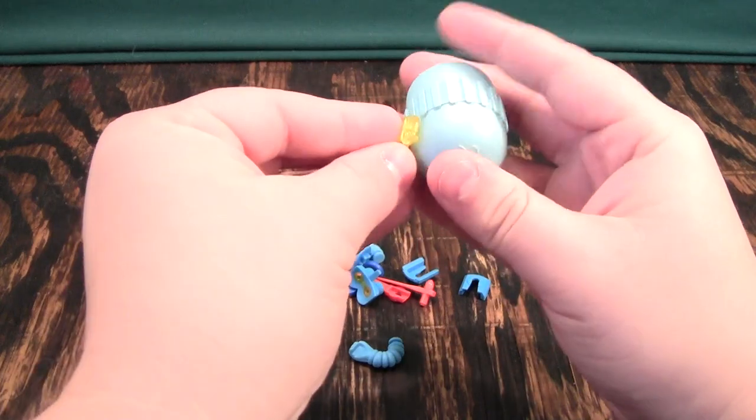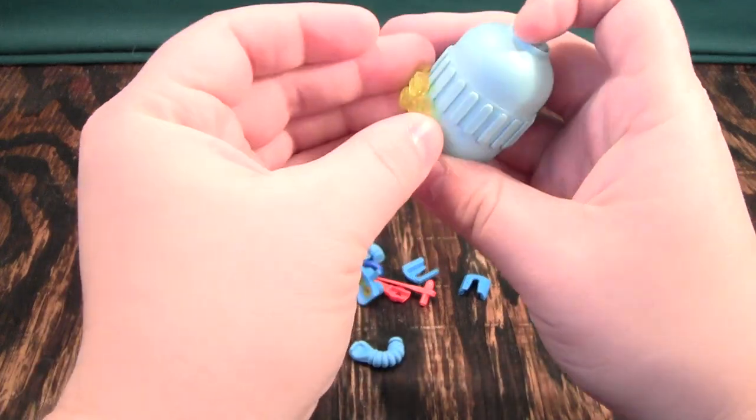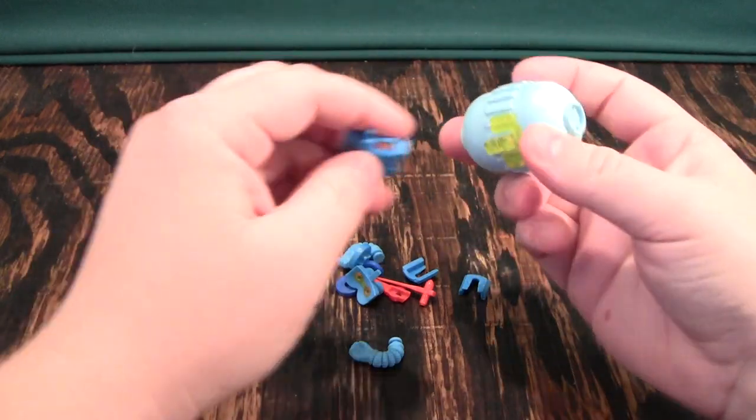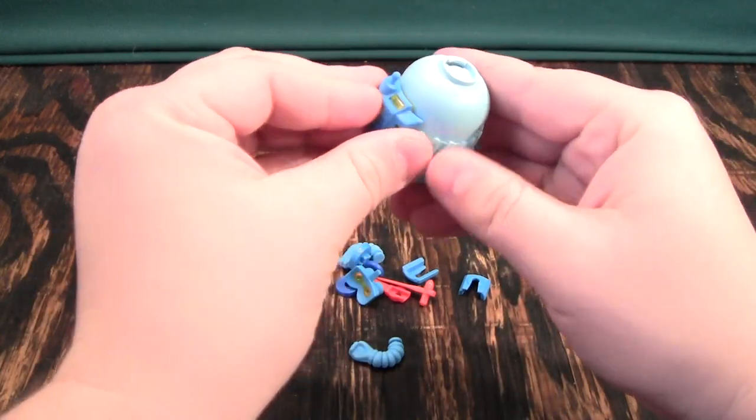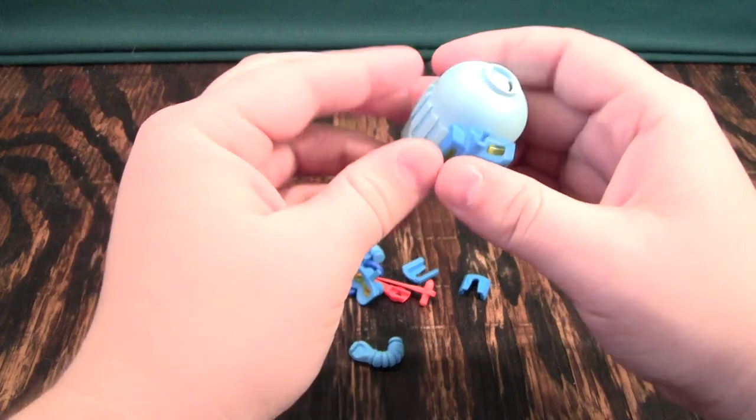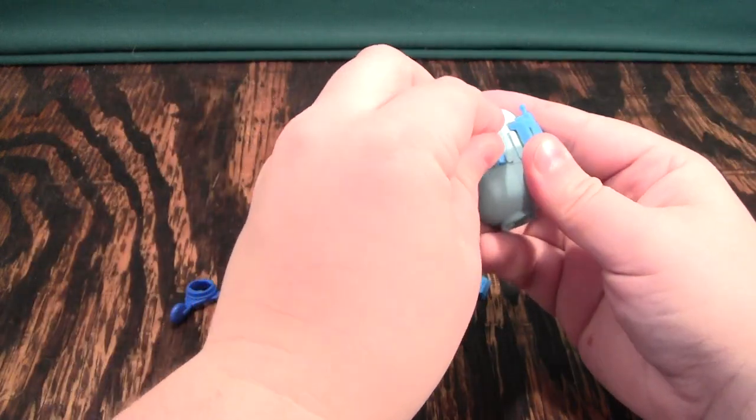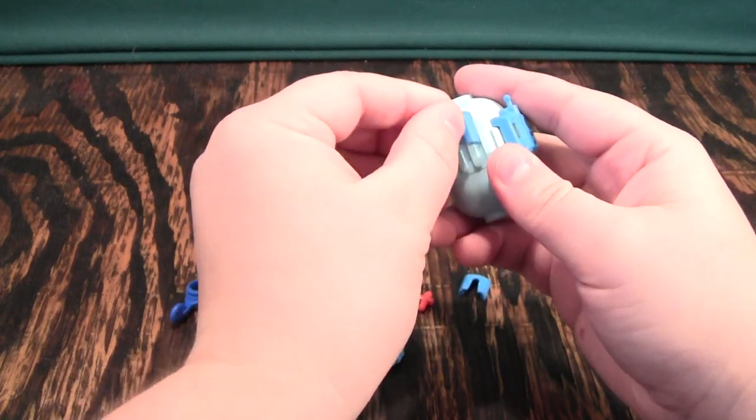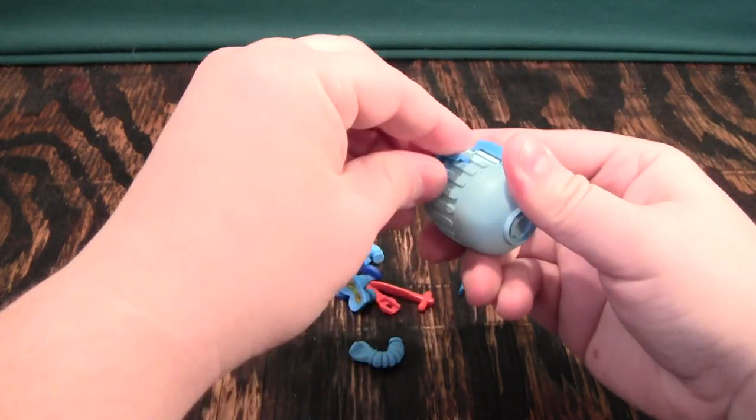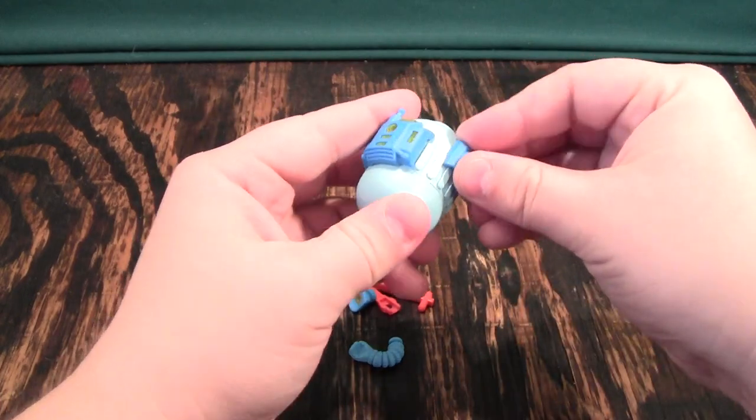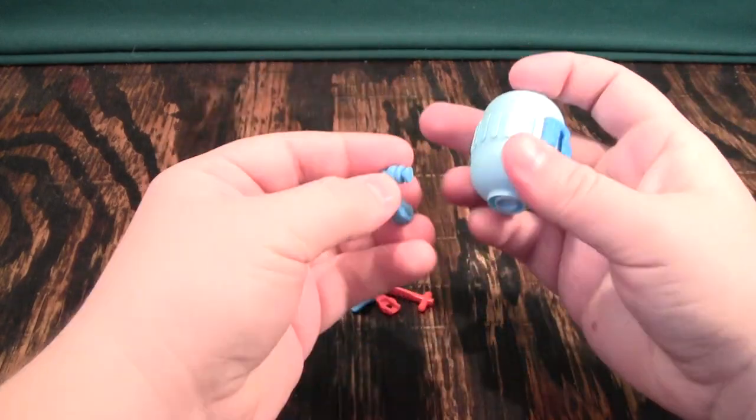We'll start by taking this piece right here and sliding it into the back. Then we'll take this and put it on like this. We'll take these and put them on. They slide on. Sometimes it's a little bit hard to get parts to slide onto these because it's a very close fit.